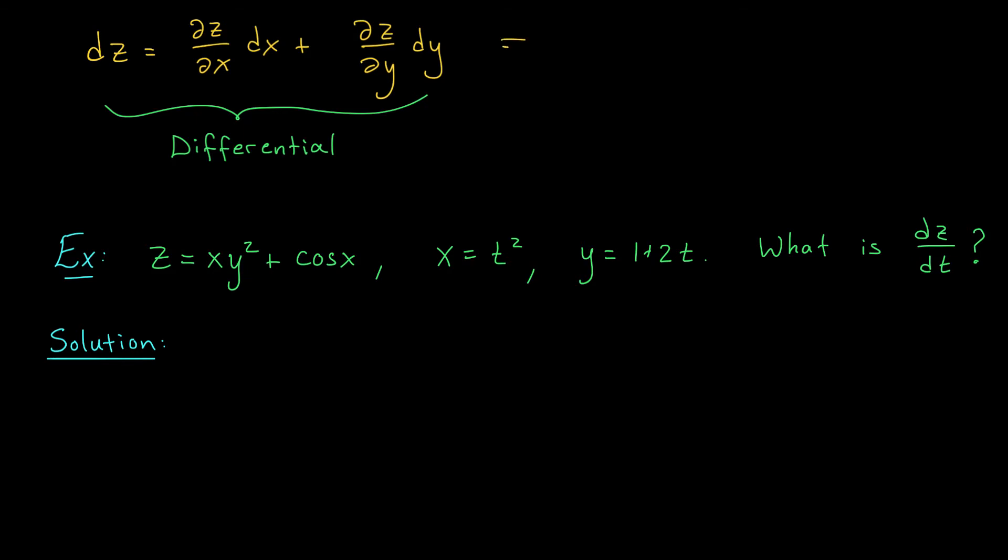Now, if we go ahead and divide both sides of this expression by the infinitesimal dt, what we get is dz over dt, which is what we're looking for, is equal to the partial derivative of z with respect to x times dx over dt plus the partial derivative with respect to y times dy over dt.